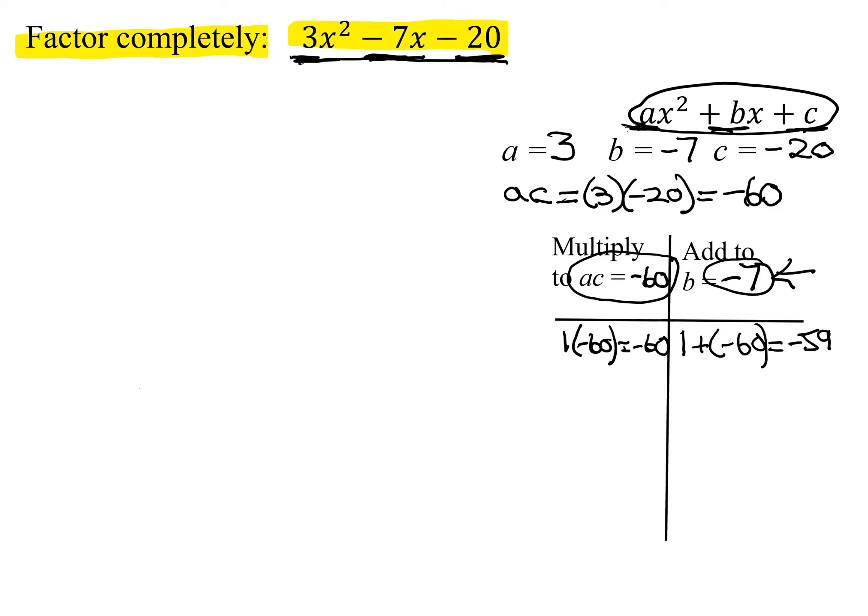So now does two go into negative 60? Yes. So I'll have two and negative 30. Those multiply to negative 60, and two added to a negative 30 is negative 28.